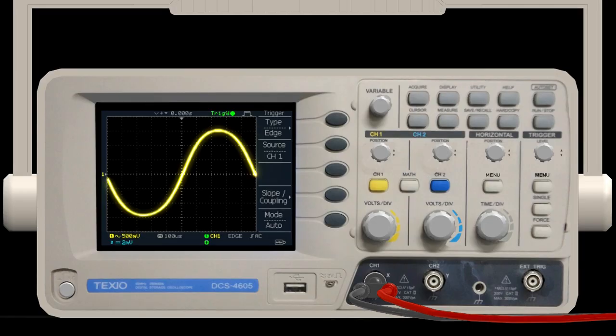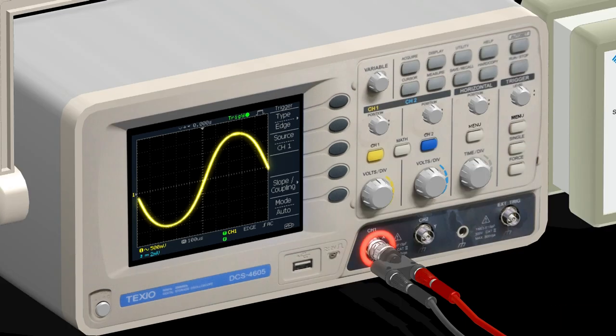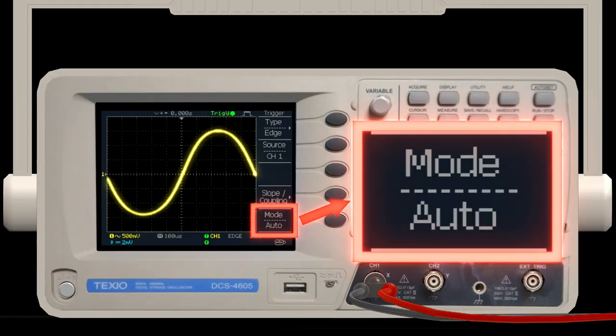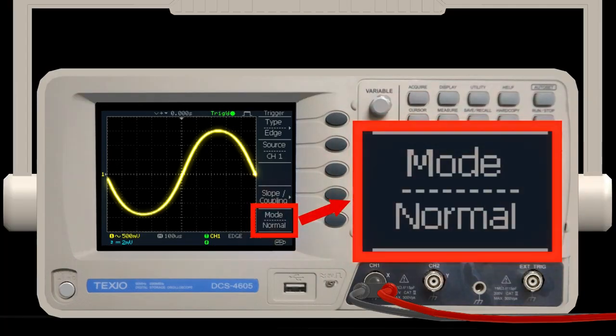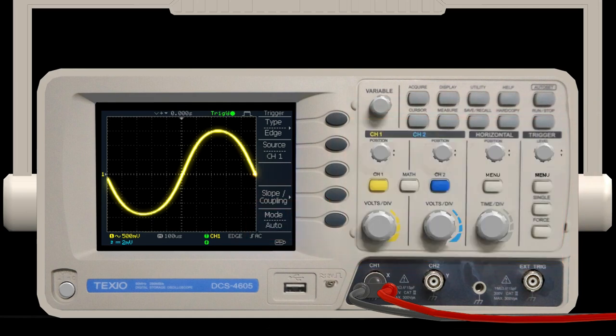For detailed trigger settings, press this menu button. Set the source of the signal you want to observe to channel 1 or channel 2. Set the mode to auto or normal. Use the trigger level knob to adjust the threshold. For clarity, the red line indicates the trigger level.